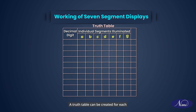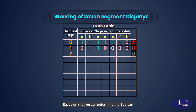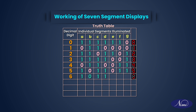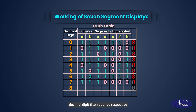A truth table can be created for each decimal digit. Based on that, we can determine the boolean expressions for each decimal digit, indicating whether the corresponding light emitting diodes should be on or off. Therefore, boolean expressions for each decimal digit determine which respective light emitting diodes are on or off.